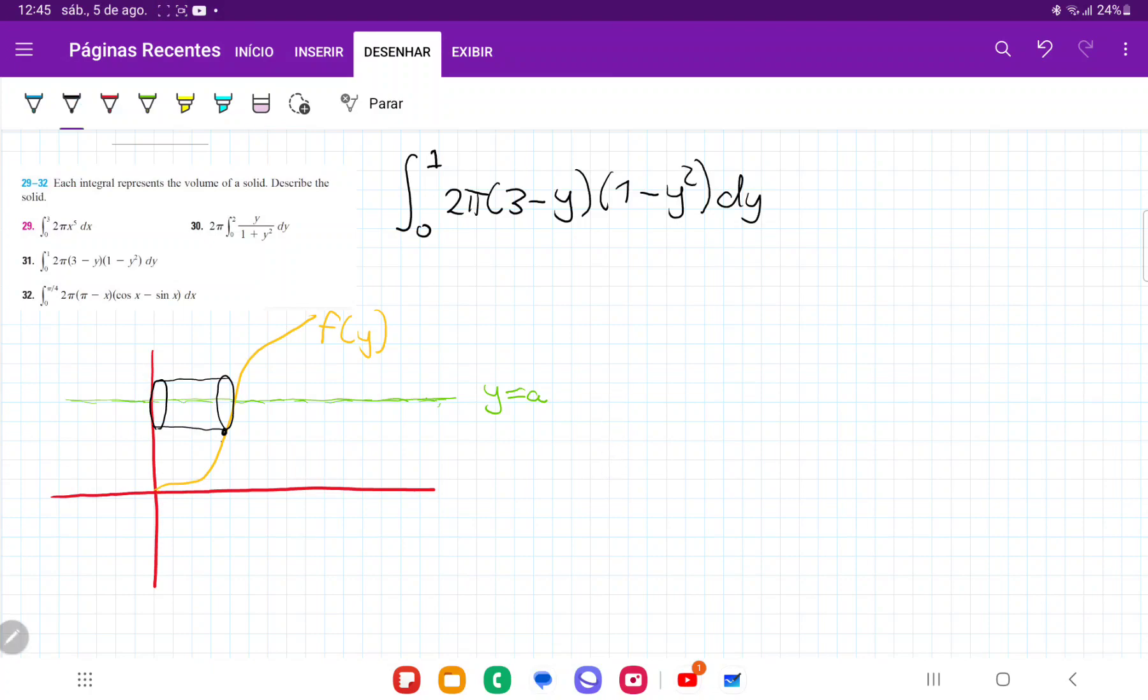So I've gone ahead and I've drawn this generic situation where we have a curve f of y, and it gets revolved about the curve y is equal to a. And the reason that I put this y is equal to a is because of this guy right here. So generally speaking, when we revolve a curve about a horizontal axis, it goes 2π y times f of y dy.